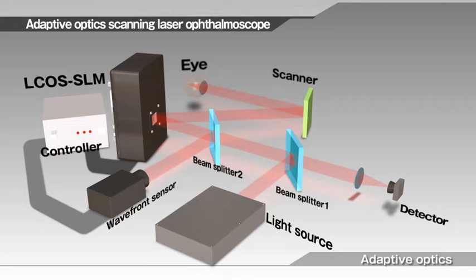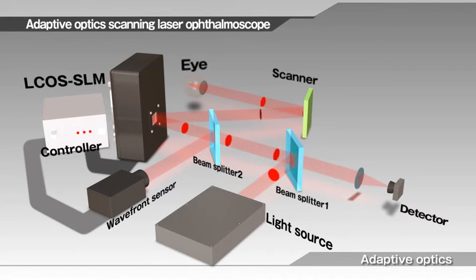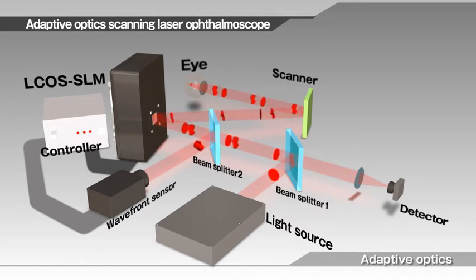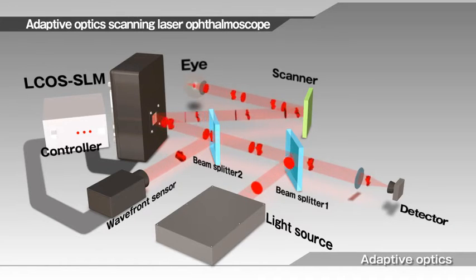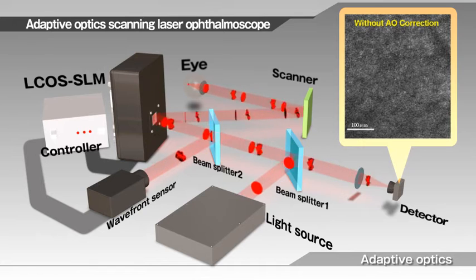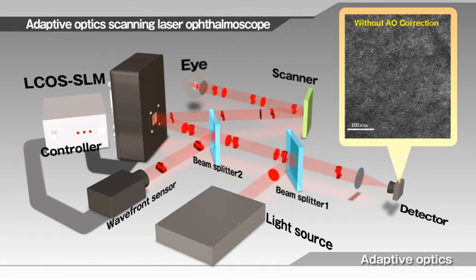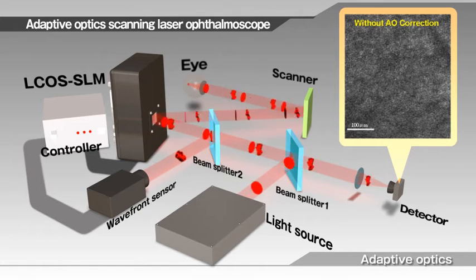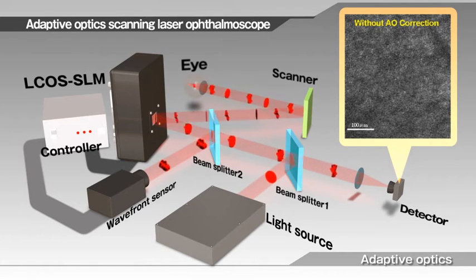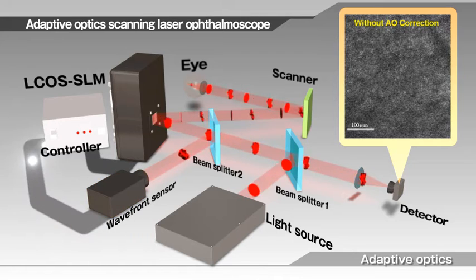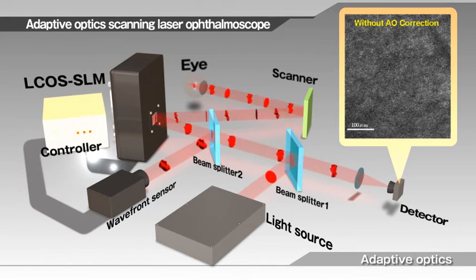It has been impossible for fundus imaging systems to capture consistently sharp images of the fundus, or back of the eye, since each person has unique aberrations there. Adaptive optics techniques using LCOS SLM dynamically correct these unique visual aberrations to capture clear and sharp fundus images.